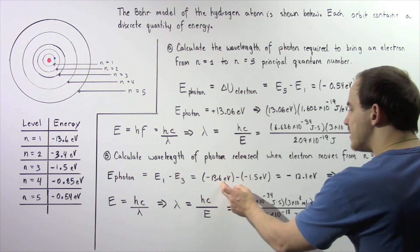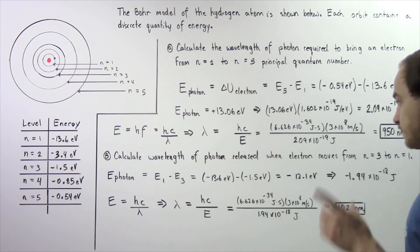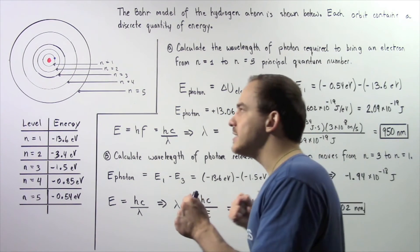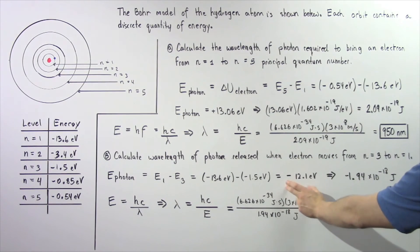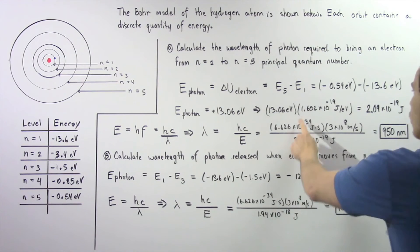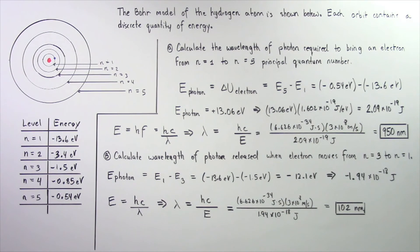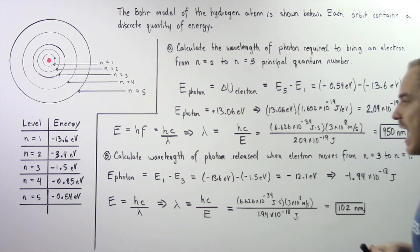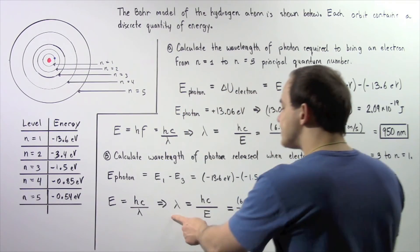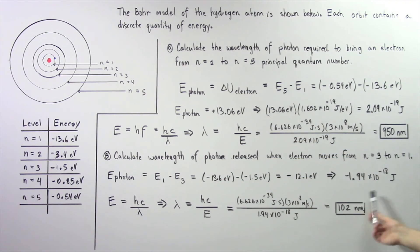Final minus initial: negative 13.6 electron volts minus negative 1.5 electron volts gives us negative 12.1 electron volts. The negative simply means that the photon is being released and the electron is losing energy. Converting electron volts to joules, we multiply by 1.602 times 10 to the negative 19 joules per electron volt; electron volts cancel and we're left with negative 1.94 times 10 to the negative 18 joules. We rearrange and solve for lambda using Planck's constant h multiplied by c divided by E, using the absolute value of the energy.